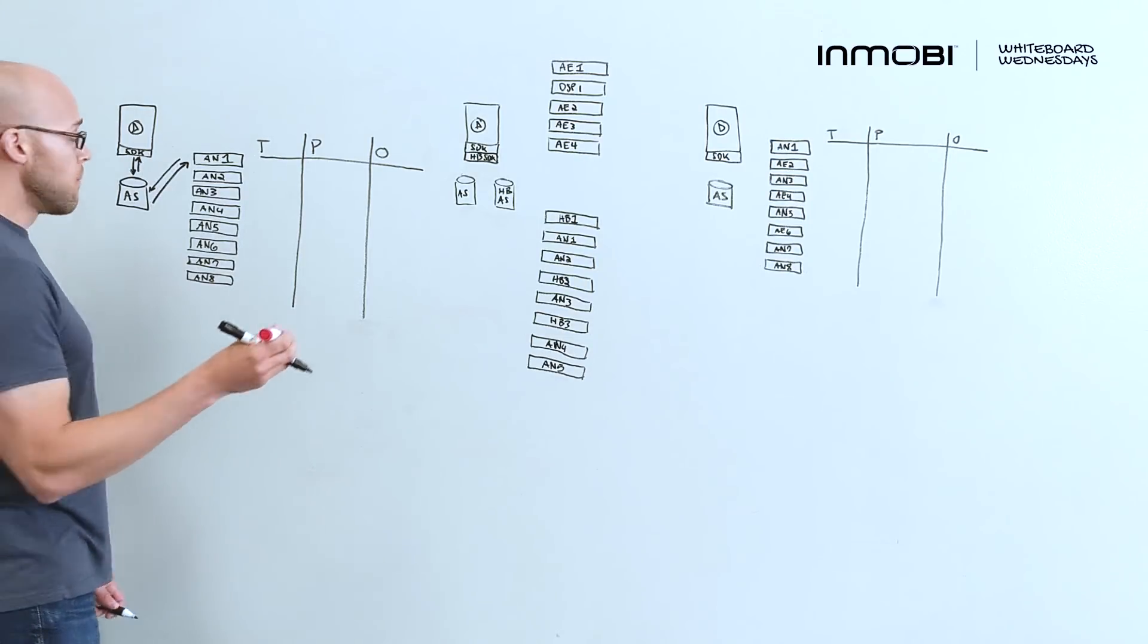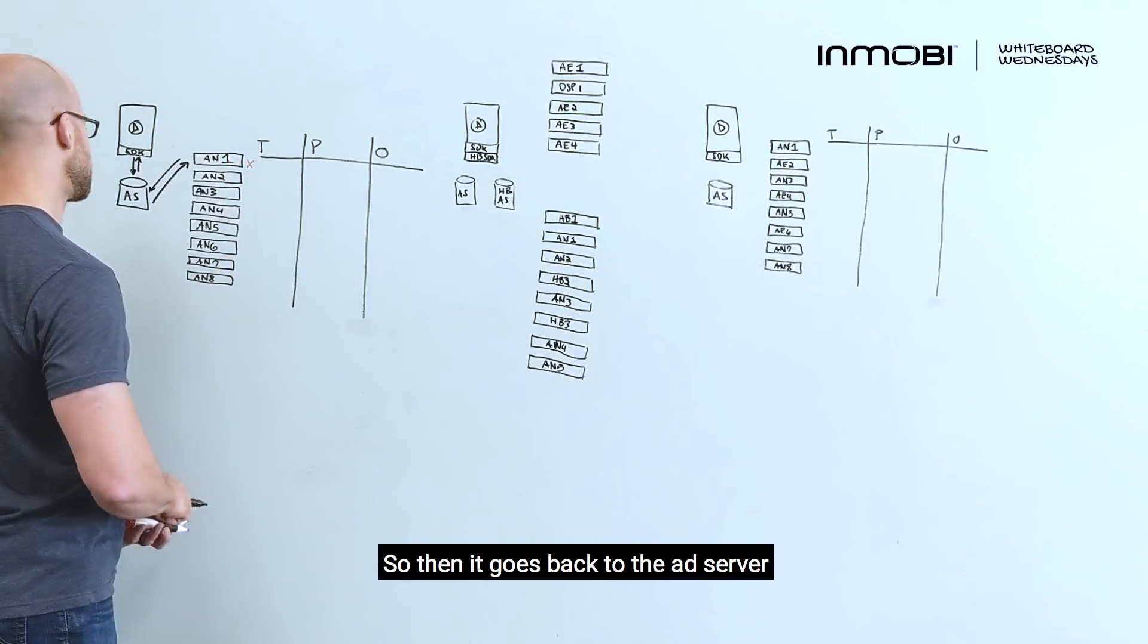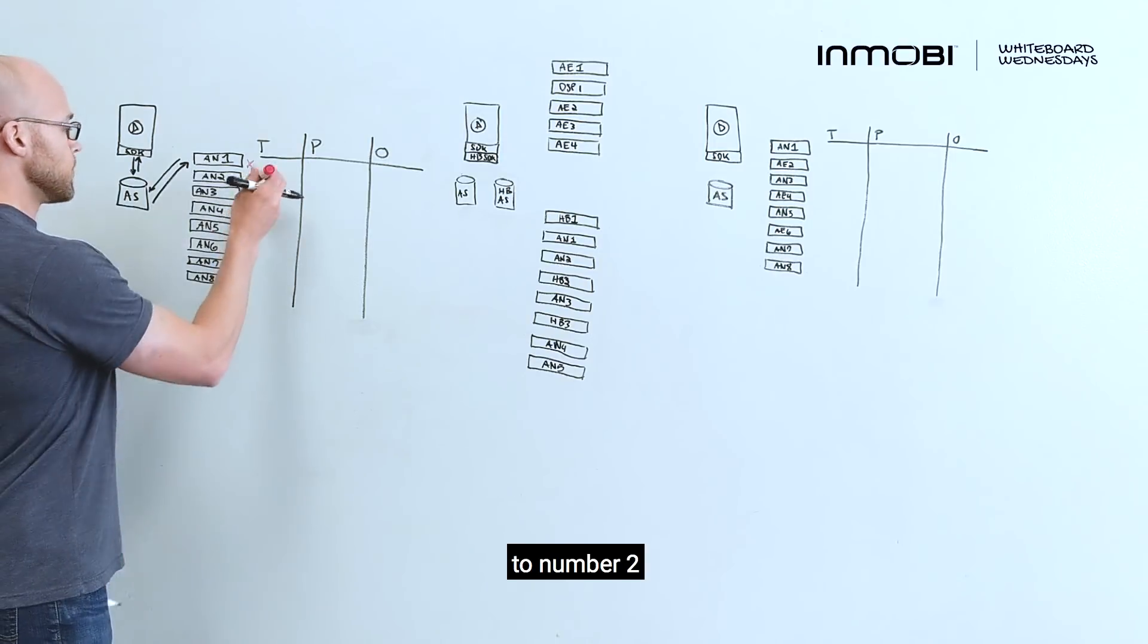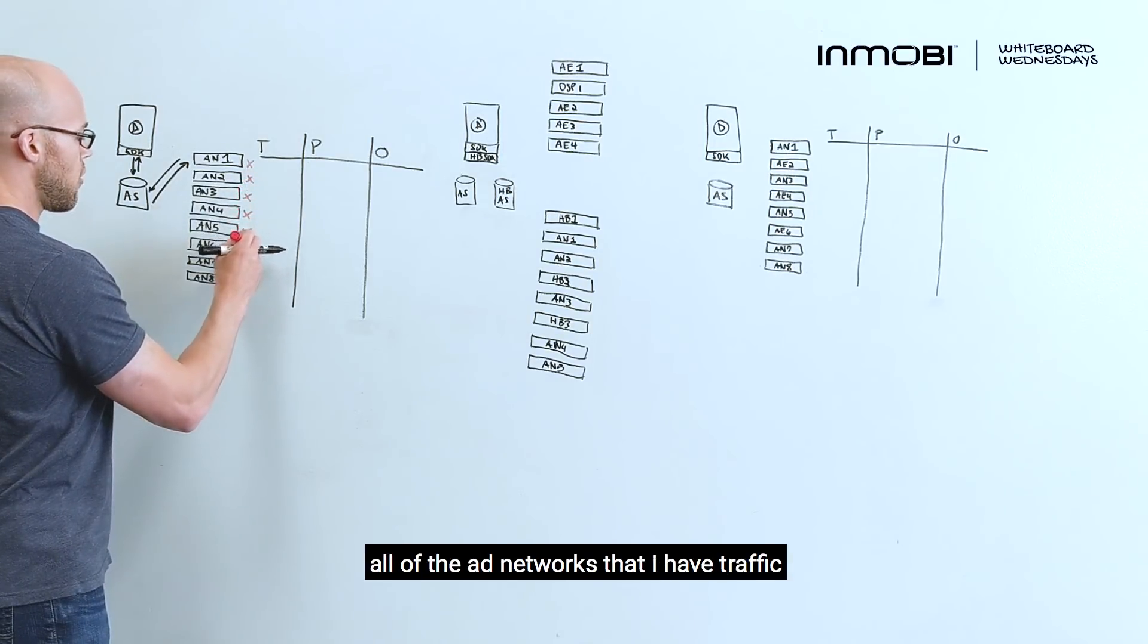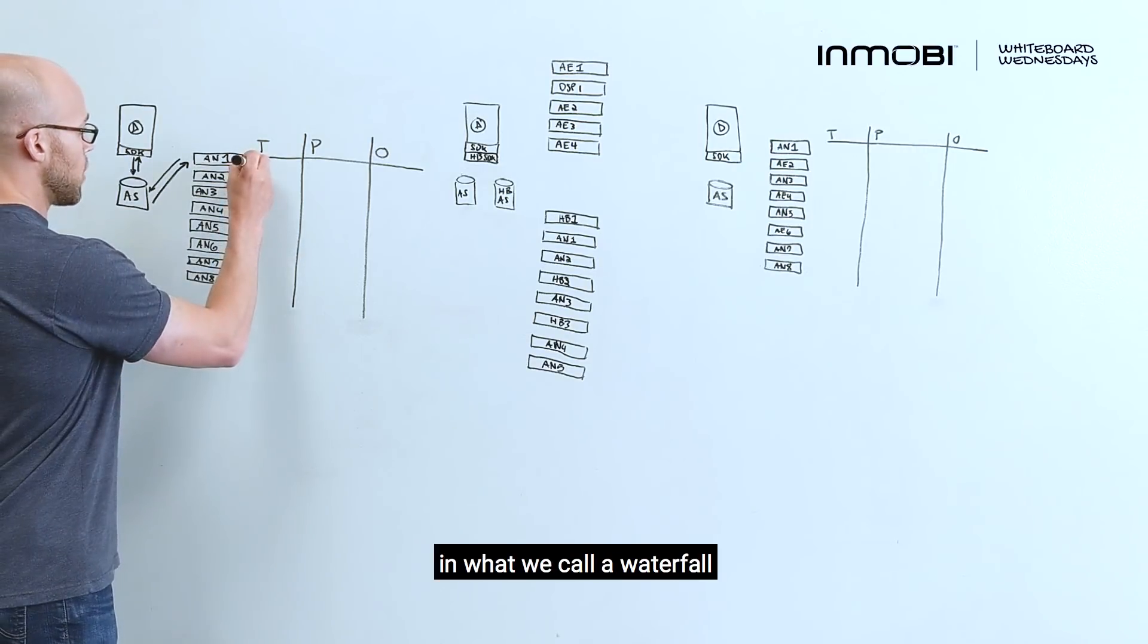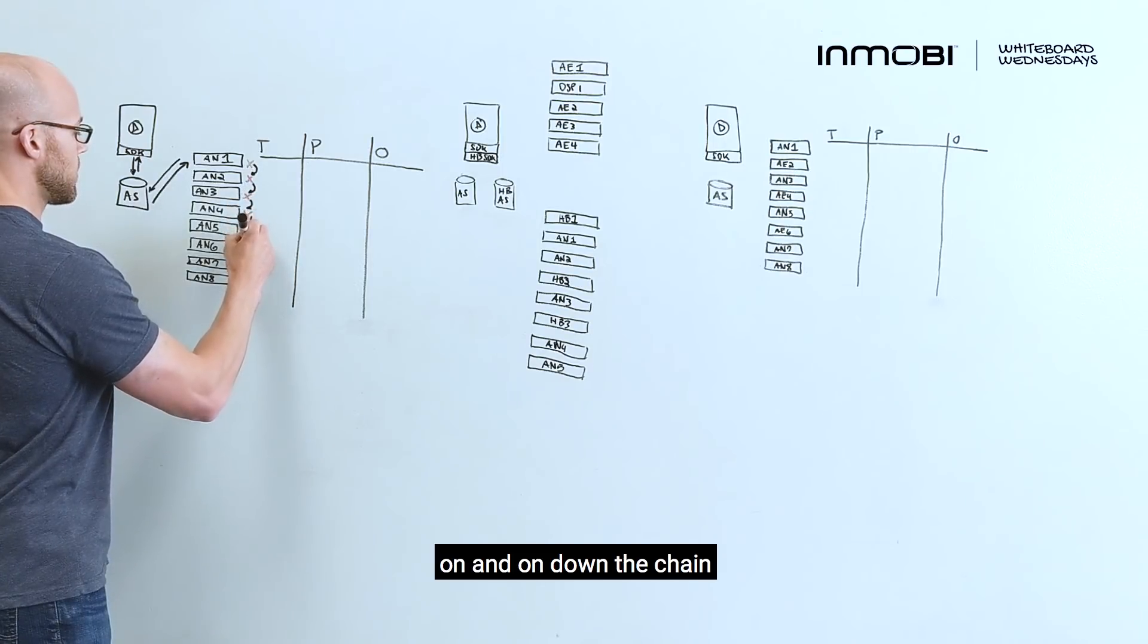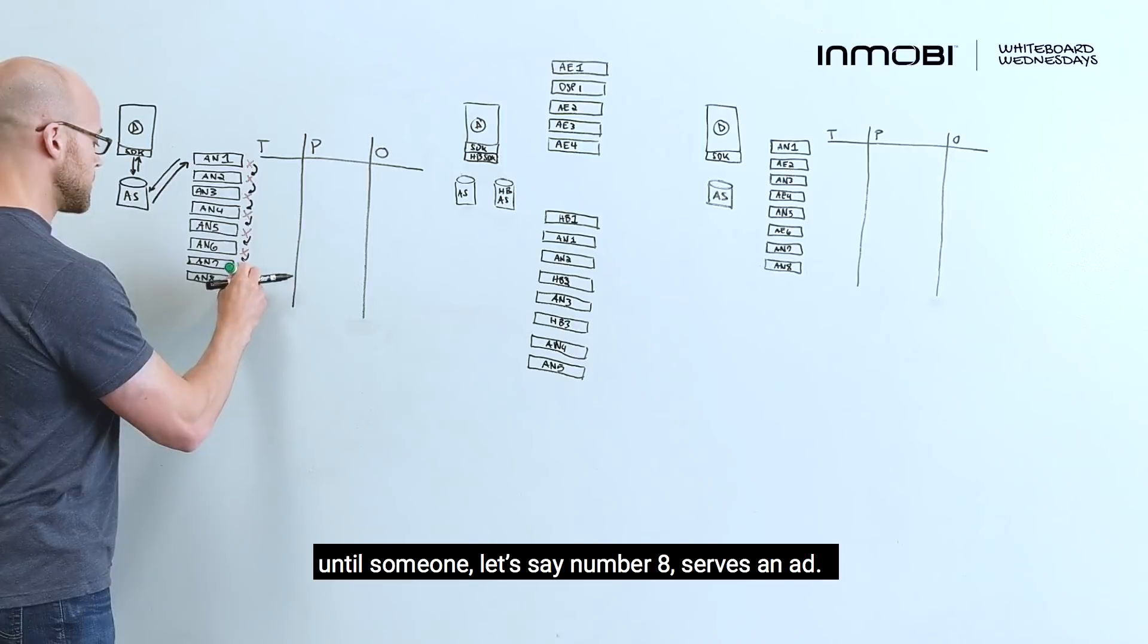Now, oftentimes there'll be no ad to serve. So then it goes back to the ad server following that same chain to number two. In a worst case scenario, it may go through all of the ad networks that I have trafficked in what we call a waterfall. On and on down the chain until someone, let's say number eight, serves an ad.